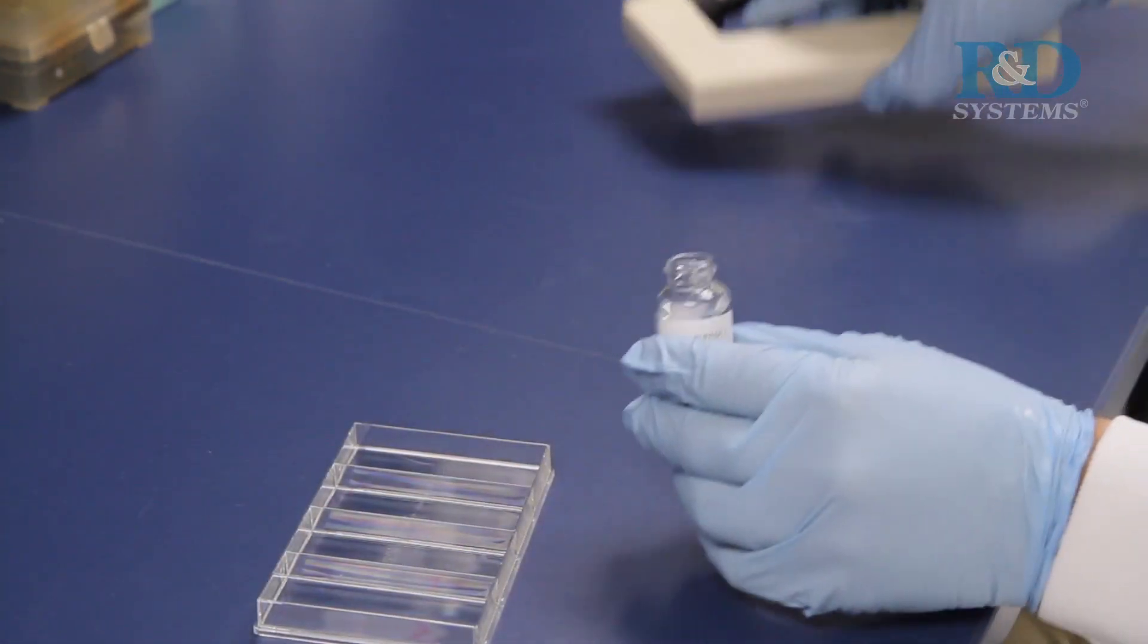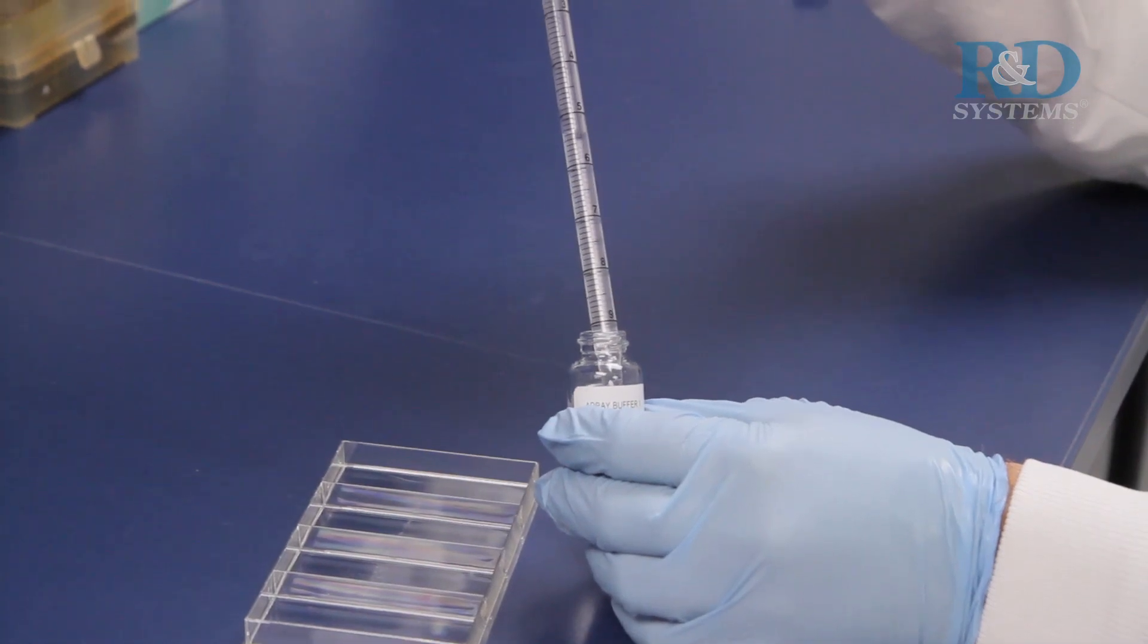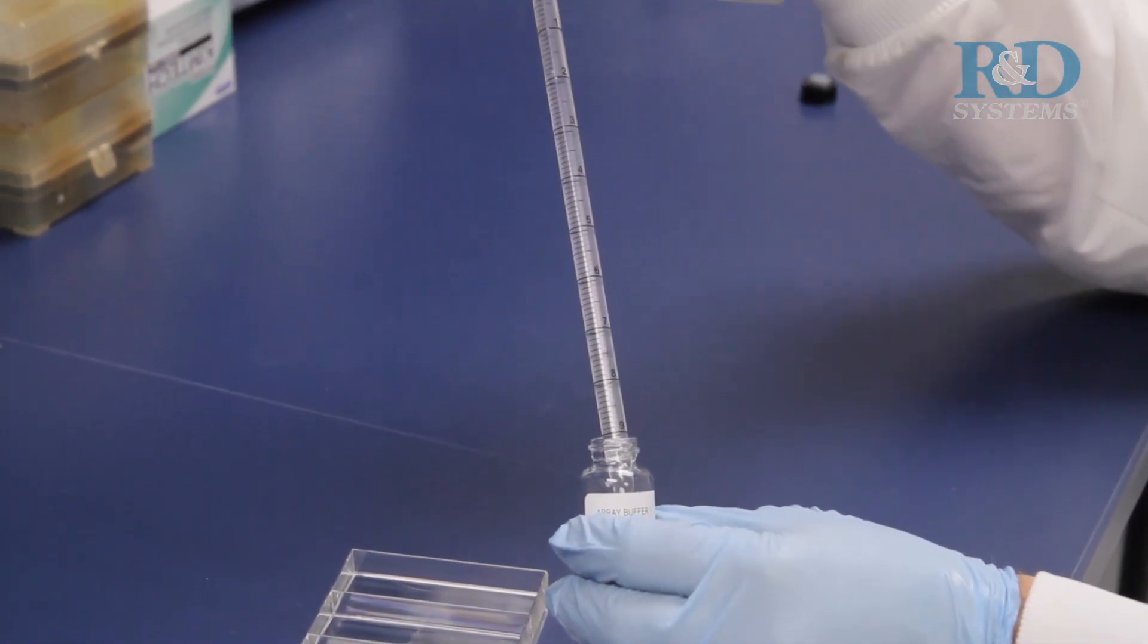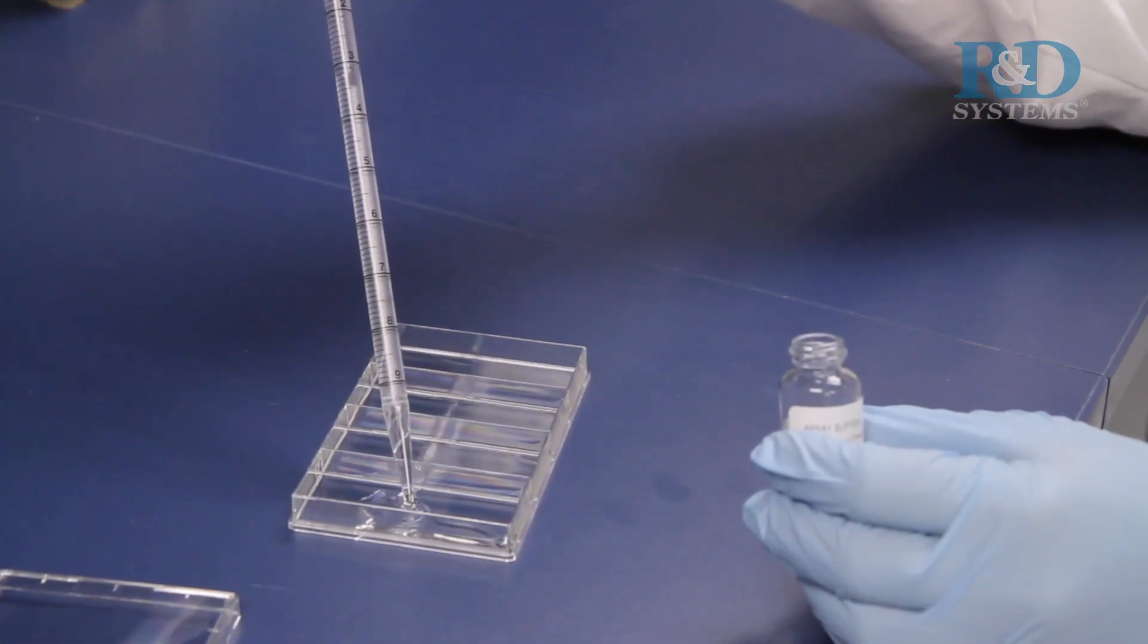Once reagents are at room temperature, pipette 2.0 milliliters of array buffer 1 into each well of the 4-well multi-dish to be used. Array buffer 1 serves as a block buffer.